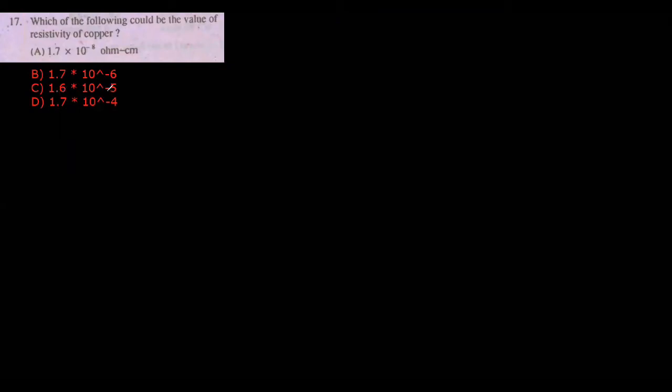Which of the following could be the value of resistivity of copper? Option A is 1.7 times 10 to the power minus 8 ohm-centimeter, option B is 1.7 times 10 to the power minus 6 ohm-centimeter, option C is 1.6 times 10 to the power minus 5 ohm-centimeter, and option D is 1.7 times 10 to the power minus 4 ohm-centimeter.